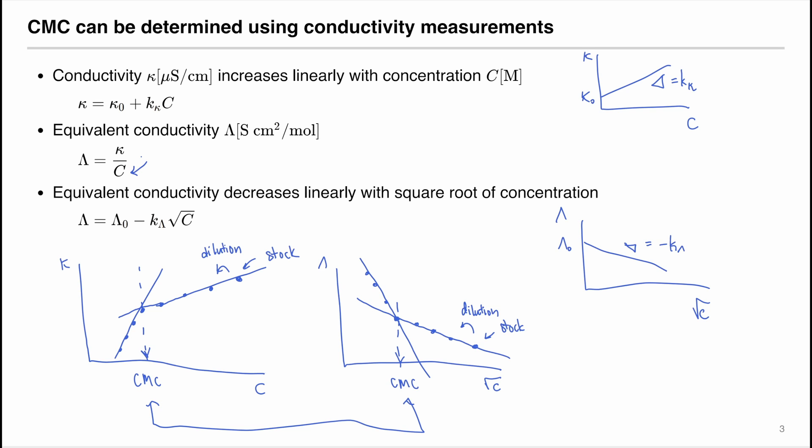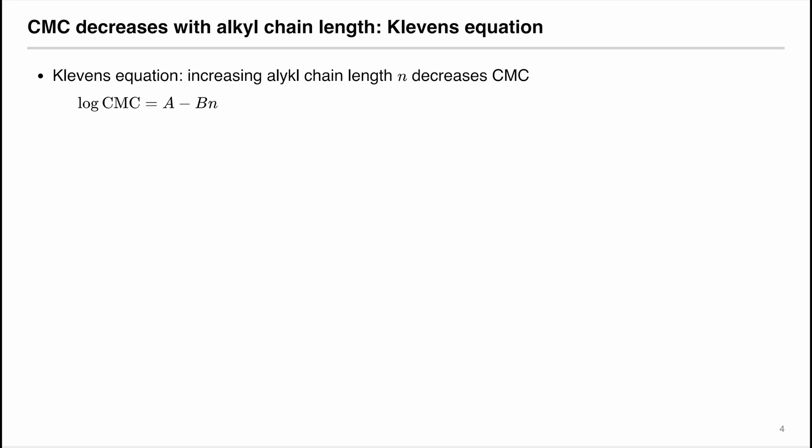The method for measuring conductivity will be discussed later in the experimental setup. After knowing how to measure CMC using conductivity, we can explore the dependence of CMC on other factors. In this experiment, we'll explore the dependence on the alkyl chain length.